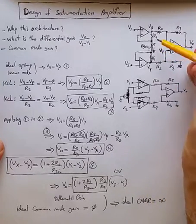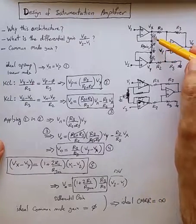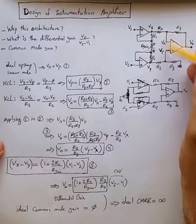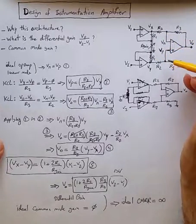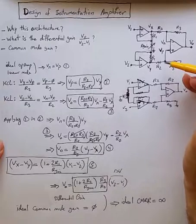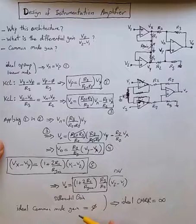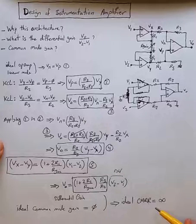But in real life, there is always a mismatch between R1 on top and bottom, and between R2 and R3 as well. So we are dealing with some level of mismatch. Therefore, in real life, common mode gain is not zero, and CMRR is some finite value.